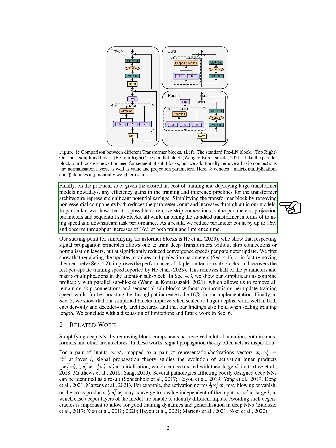On the practical side, given the high cost of training and deploying large transformer models, any efficiency gains in the training and inference pipelines represent significant potential savings. We show that it's possible to remove skip connections, value parameters, projection parameters, and sequential sub-blocks, all while matching the standard transformer in terms of training speed and downstream task performance. As a result, we reduce the parameter count by up to 16% and observe throughput increases of 16% at both train and inference time.